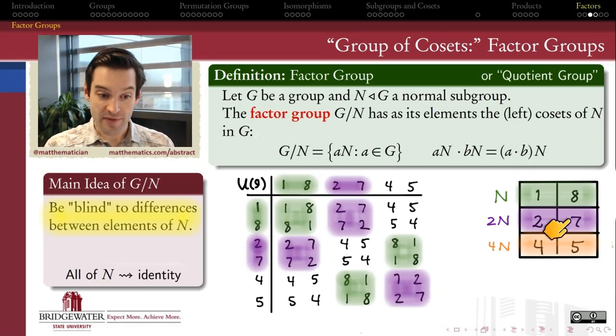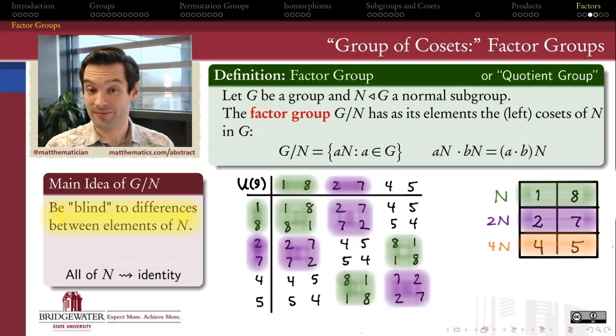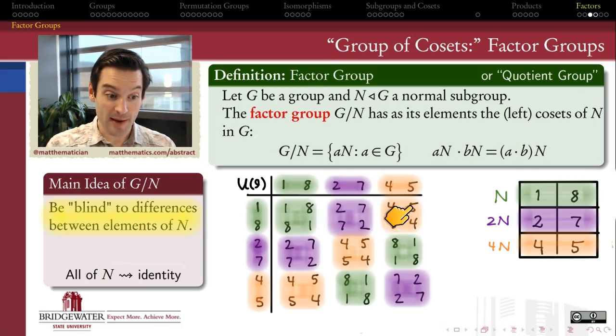Likewise, {2, 7}, this other coset, we can think of as now an element, the second column and the second row in a new Cayley table. And appearing here as a block, here as a block, and there as a block. And then my remaining coset, {4, 5}, appears as what looks like an element in the third column and the third row of my new Cayley table. And appearing in the middle of my Cayley table as a 2 by 2 block right there, there, and there.